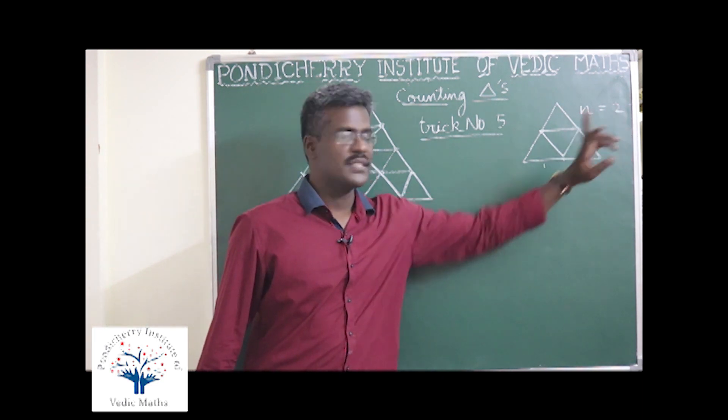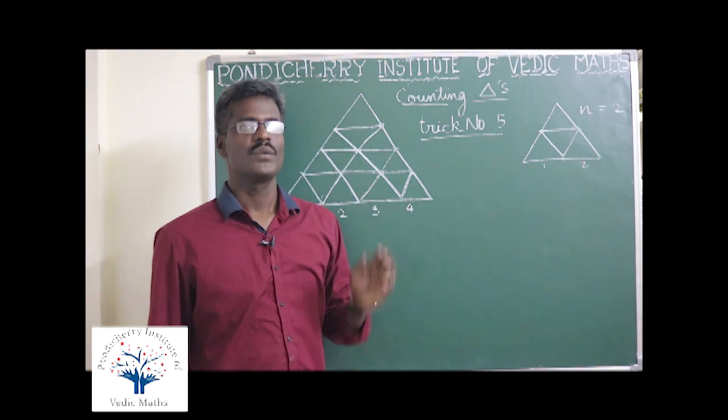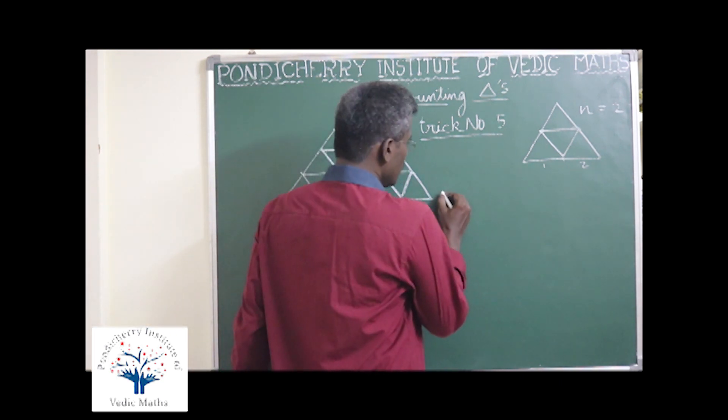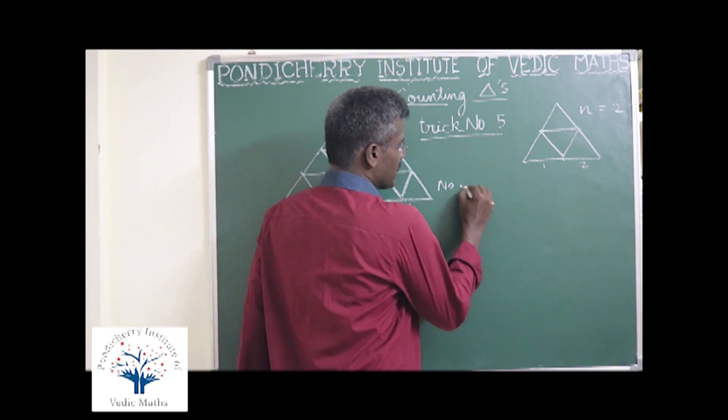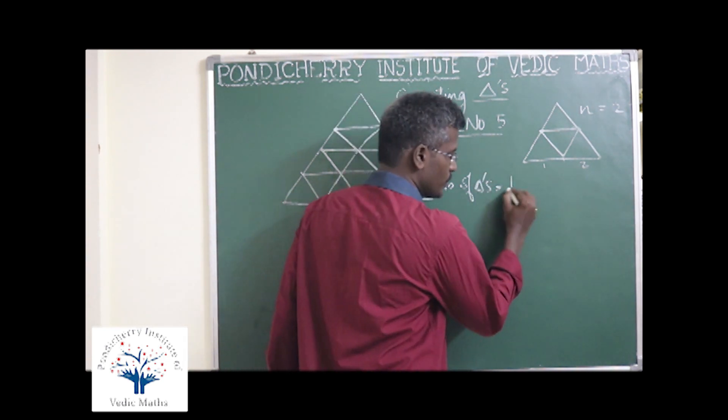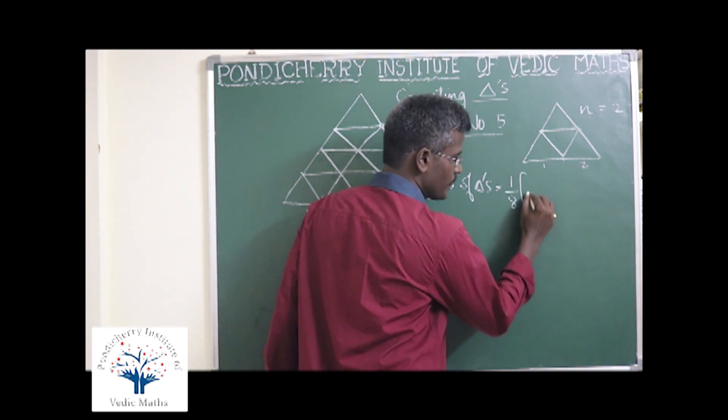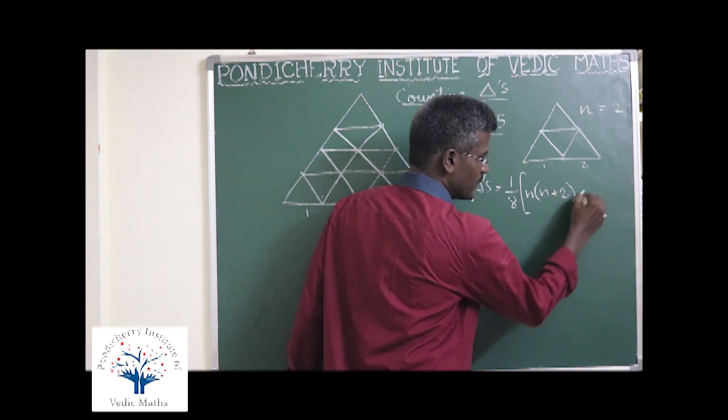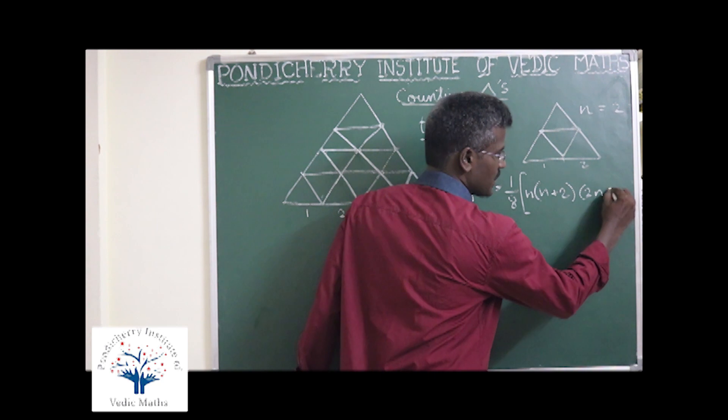For example, n is equal to 2. What is the formula you have to use? Number of triangles is equal to 1 by 8 into n into n plus 2 into 2n plus 1.